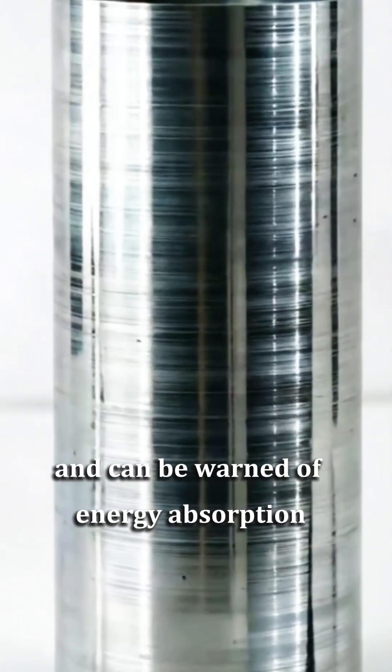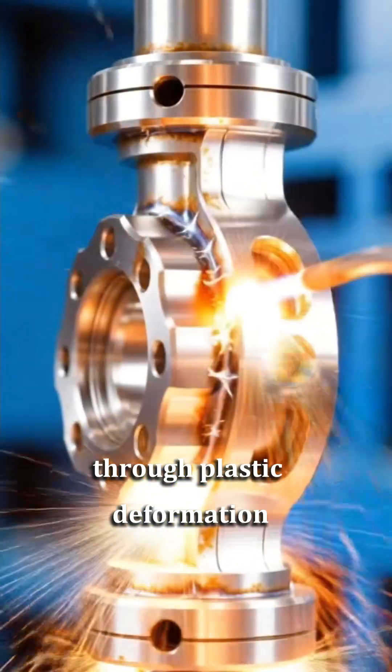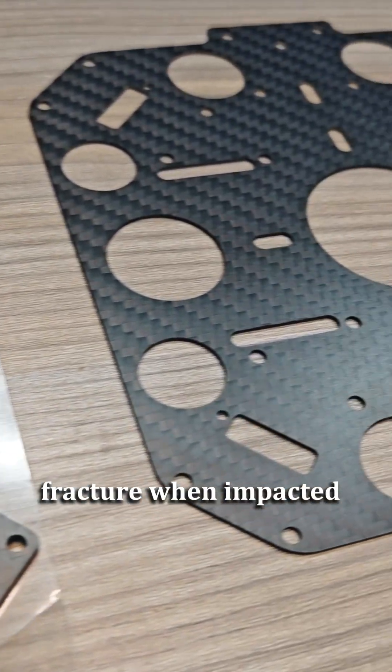Metals have good toughness and can absorb energy through plastic deformation. Carbon fiber is prone to brittle fracture when impacted.